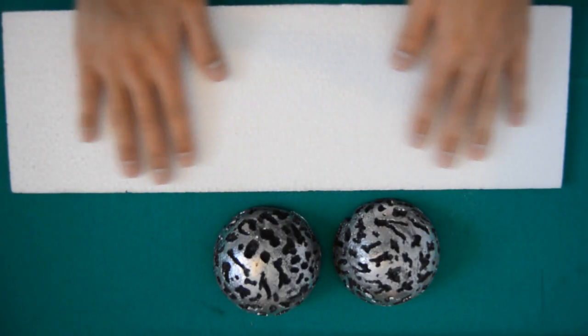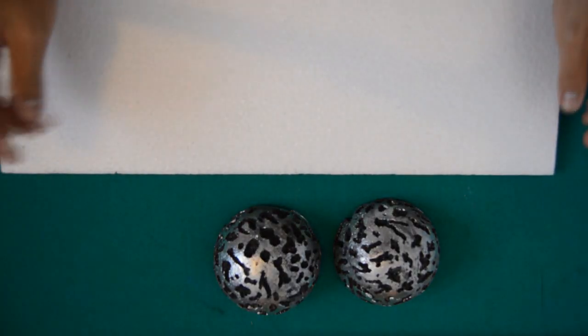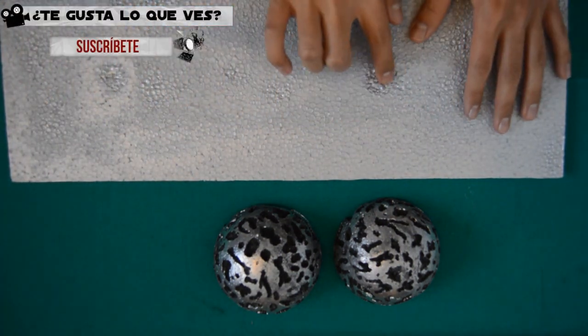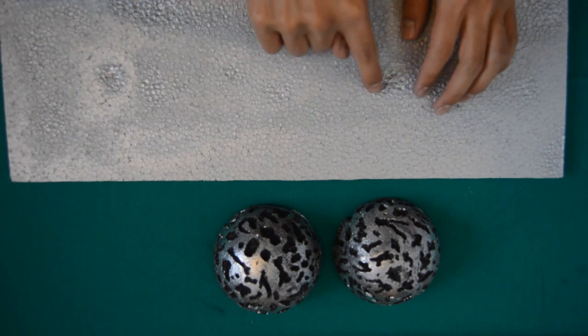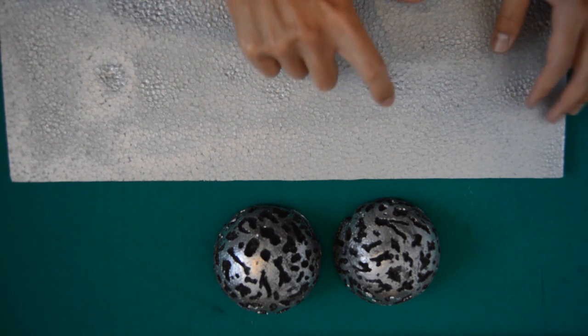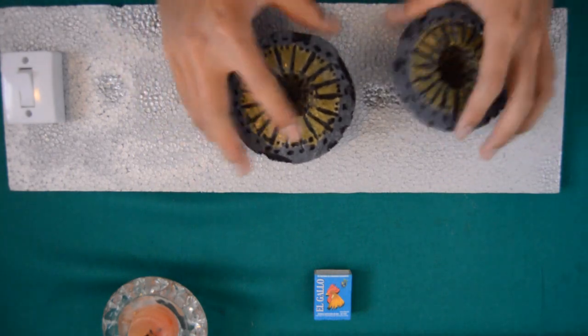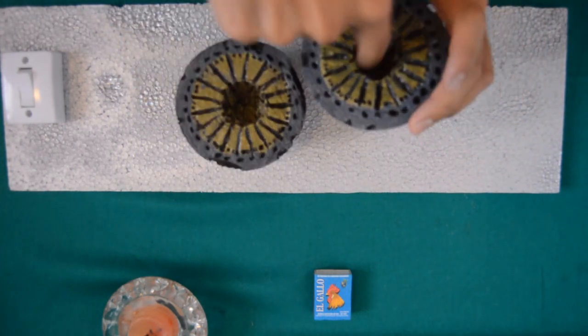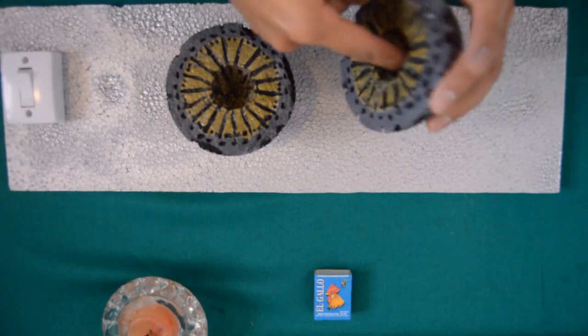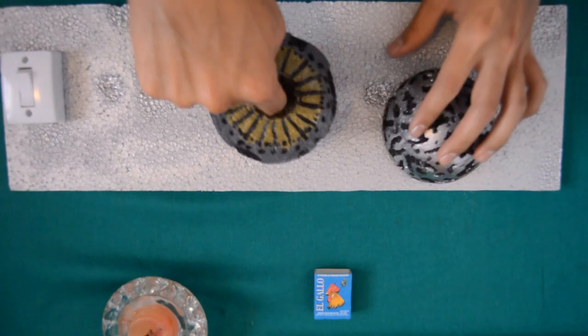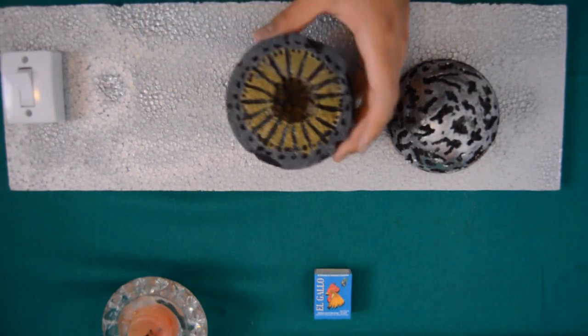Vamos a usar una plancha de espuma flex que yo la voy a pintar de plateado. Entonces yo pinté esto con aerosol y si se pueden fijar en esta parte de aquí, está como más desgastado fue porque le acerqué el aerosol. Y ahora vamos a escoger cuál de los dos es el que tiene el agujero más profundo. Para que ahí entre el foquito LED y pueda quedarlo más separado. Entonces este es el más profundo y vamos a poner el foco LED de este lado.